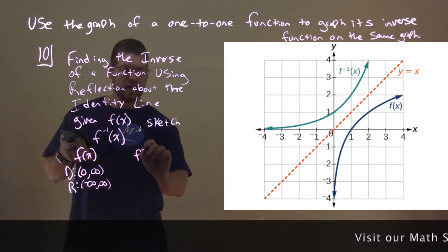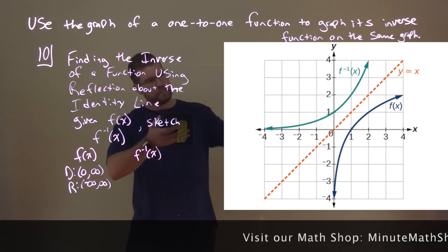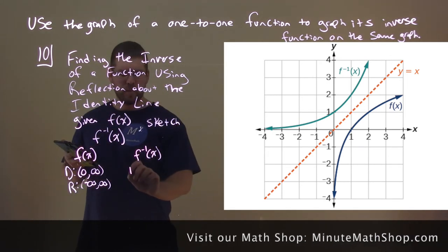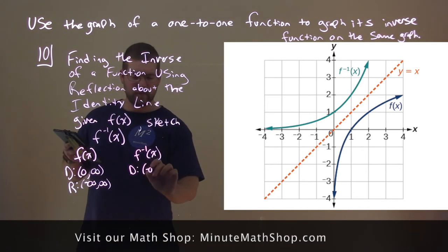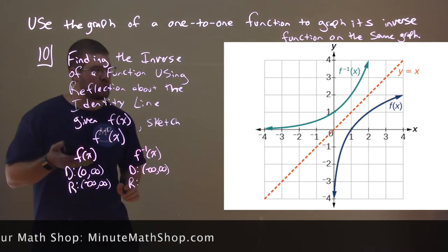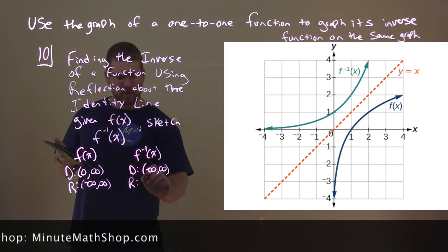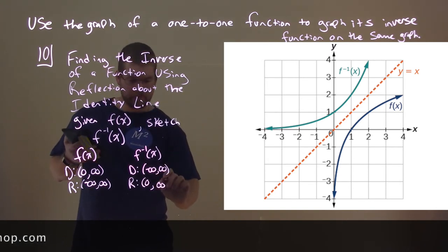What about f inverse of x when we flip this over, over the identity line? We're going to write it over. Well, its domain now goes from left to right from negative infinity to positive infinity, and the range is what's restricted and never will hit zero. So we have zero to up to positive infinity.